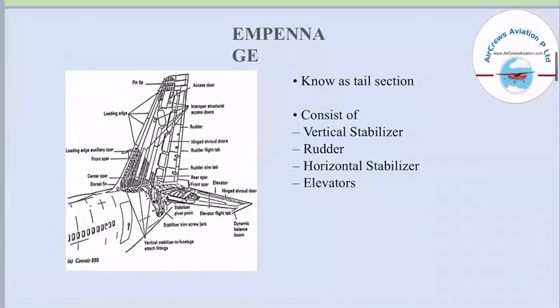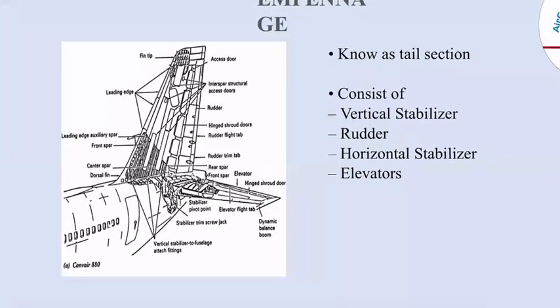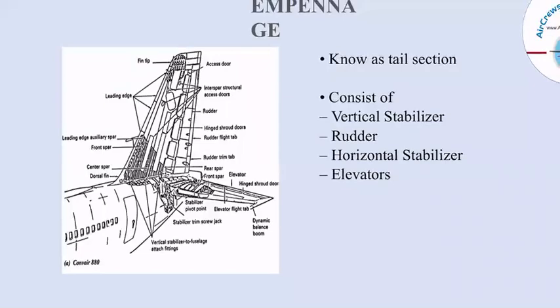The empennage is the tail section of the aircraft. It basically consists of the vertical stabilizer, on which the rudder is connected, and the horizontal stabilizer, on which the elevators are connected. Here we can see a brief picture with descriptions of each portion of the empennage, along with its internal structure.